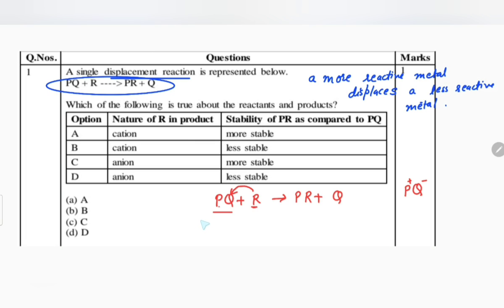PQ changes to PR, so R takes the place of Q and Q is separated. R is an anion. How can you say it is an anion? Because if it forms PR, here P is positive charge and R is negative, so R is an anion. Now the question is which of the following is true about the reactants and the products?